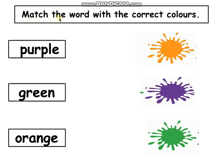Match the word with the correct colors. Repeat after me: purple, purple, purple — green, green, green. Now come on, repeat after me: orange, orange, orange.